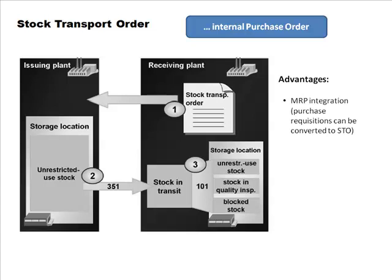A planned order can also be converted into a production order, but more relevantly here, a purchase requisition can be converted into a stock transport order instead of a regular purchase order sent to an external vendor. That's another aspect of the MRP conversion process we hadn't covered when discussing MRP earlier.